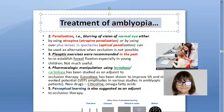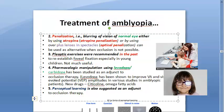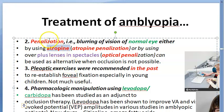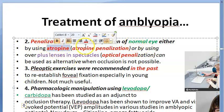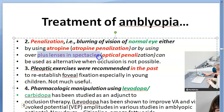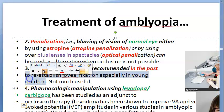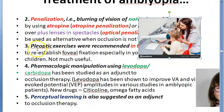After occlusion therapy, there is penalization therapy. Instead of occluding, you blur the vision of the normal eye — you penalize it for being good. This can be atropine penalization: put atropine drops so the eye becomes mydriatic and accommodation does not work. Or optical penalization: put a wrong power lens on the good eye. The child then starts using the lazy amblyopic eye.